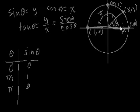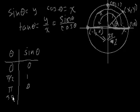Let's keep going around the circle. When theta equals 3 pi over 2, what is sine of theta? Now we intersect the unit circle down here at the point 0 comma negative 1. So sine of theta equals negative 1.